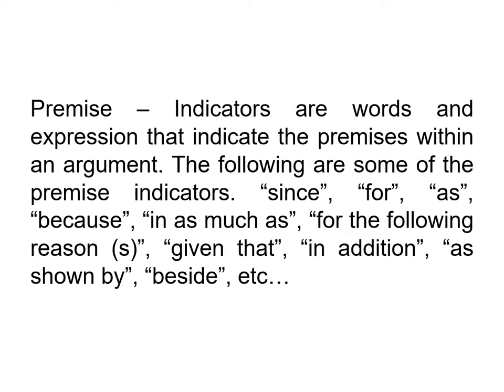We have premise indicators. These are words and expressions that indicate the premises within an argument. The following are some of the premise indicators, as you can see on the screen: since, for, as, because, inasmuch as, for the following reasons, given that, in addition, as shown by, beside, and others.